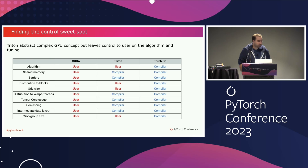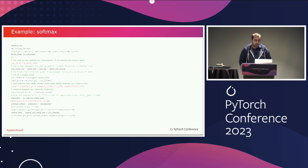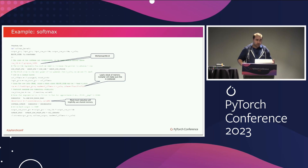Let's look at an example kernel. This is a softmax kernel — a copy-paste of a working solution. The first interesting thing is that it's relatively short; the same kernel in CUDA would not fit into that slide and would require significantly more effort. You still get control over how you distribute work on your machine through program IDs, and you still control memory accesses through pointers to load big blocks of data.